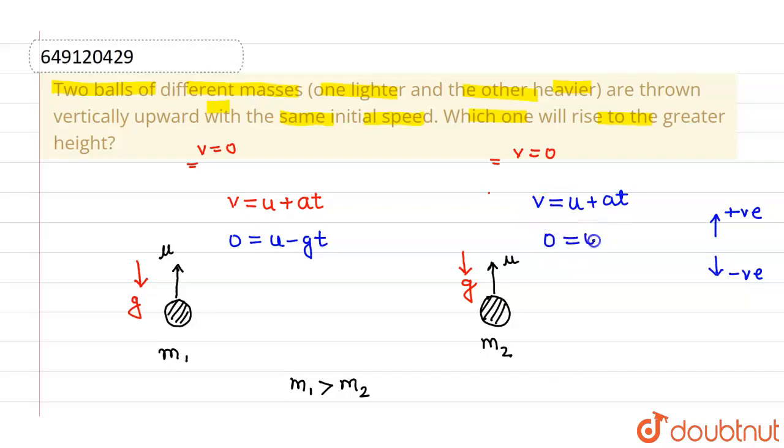And initial speed is u, acceleration is minus g and time is t. So we are having time as u by g. This is the time which is required to attain the maximum height. Now we have to find out the height.